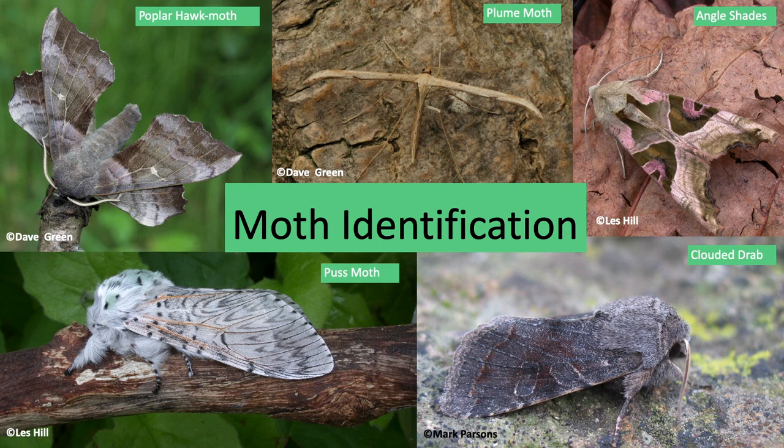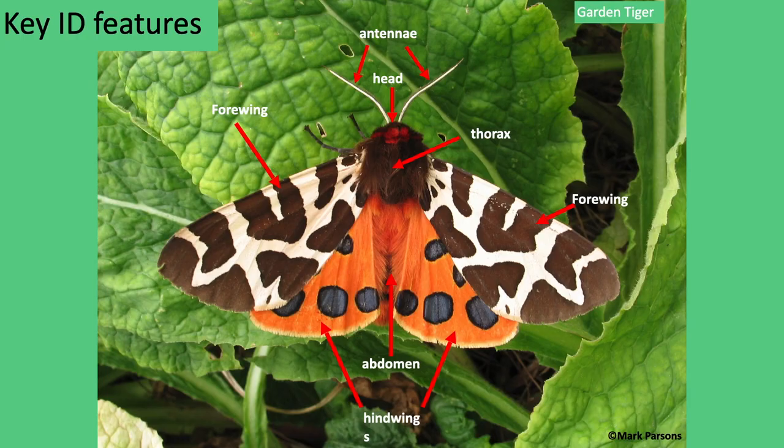Today I'm going to introduce you to the identification of moths and the different ways in which we record them. There are 2,500 moth species in the UK. Around 900 of these are macro larger moths, the rest micro smaller moths. Today we're going to focus on the larger moths, the macro moths.